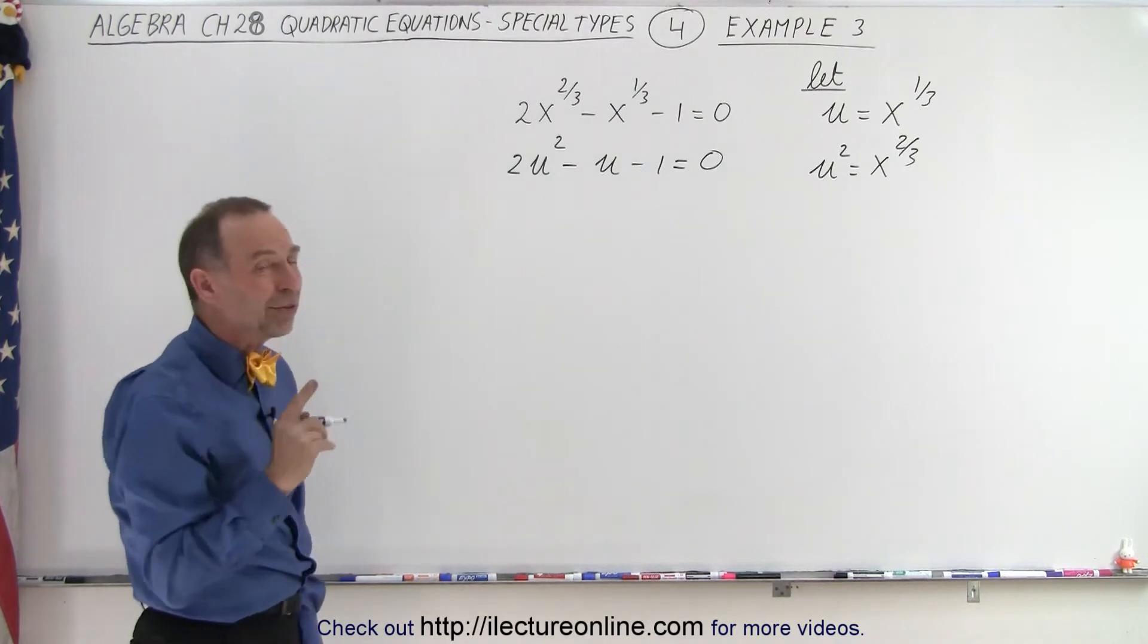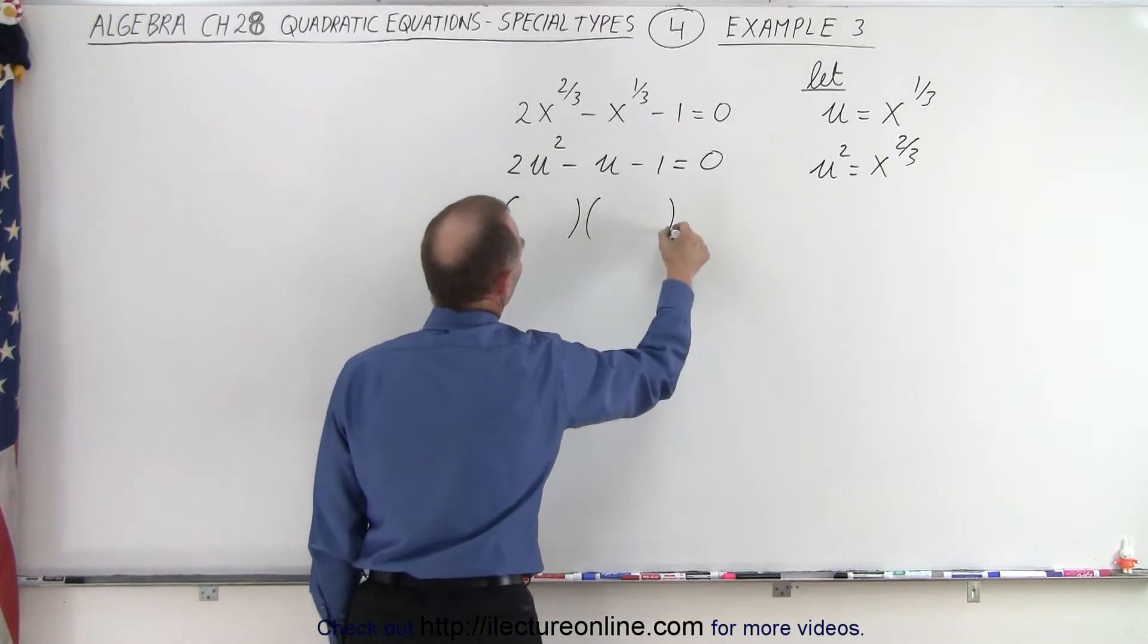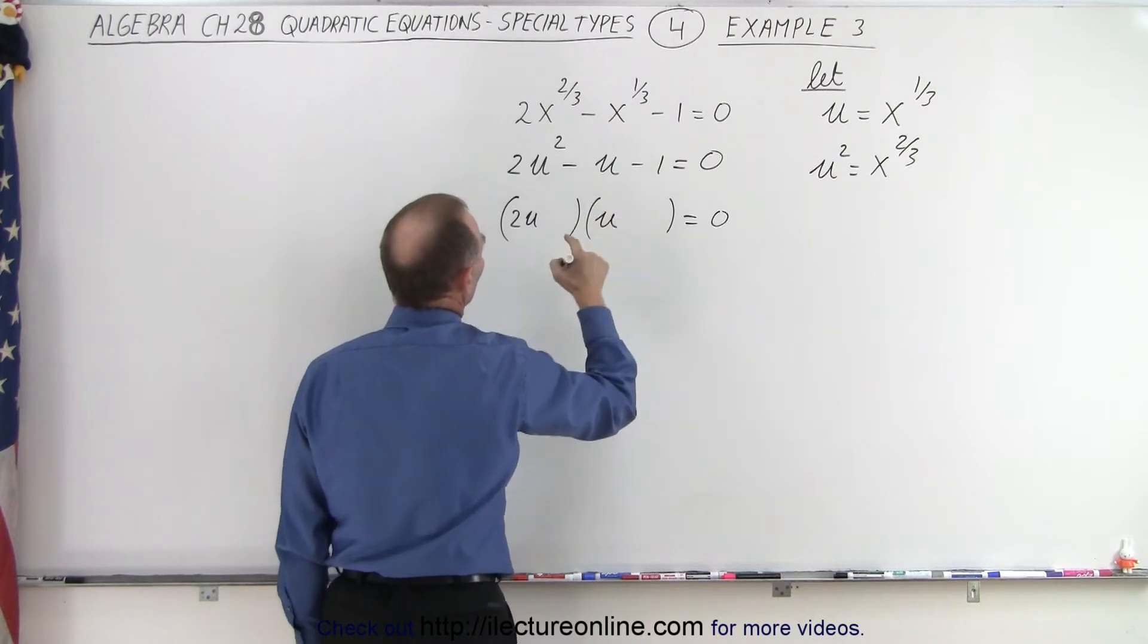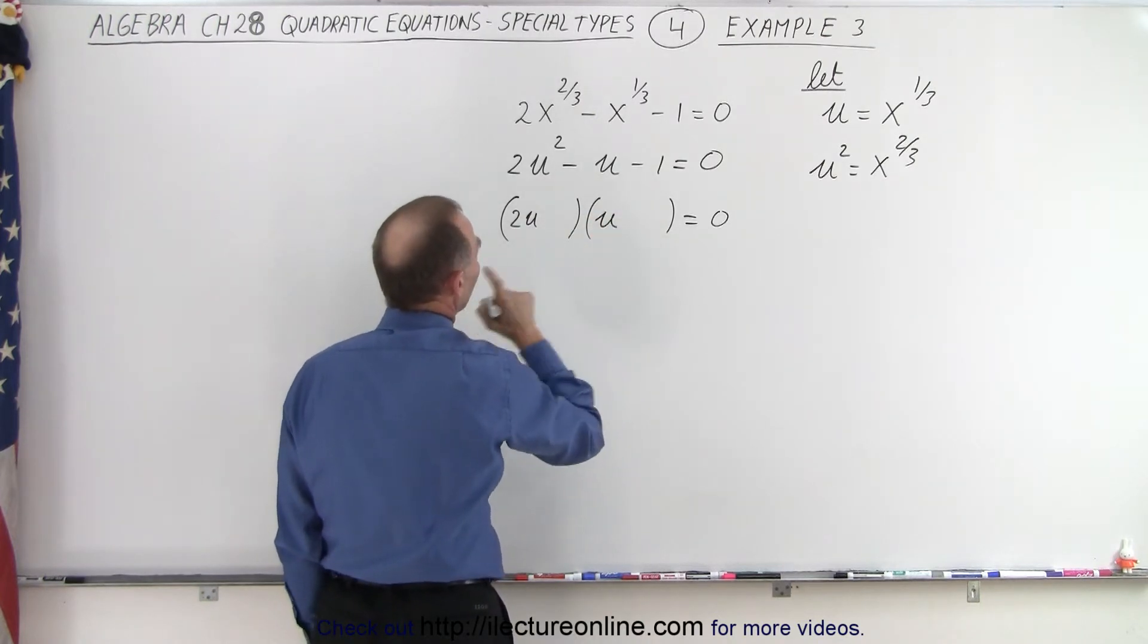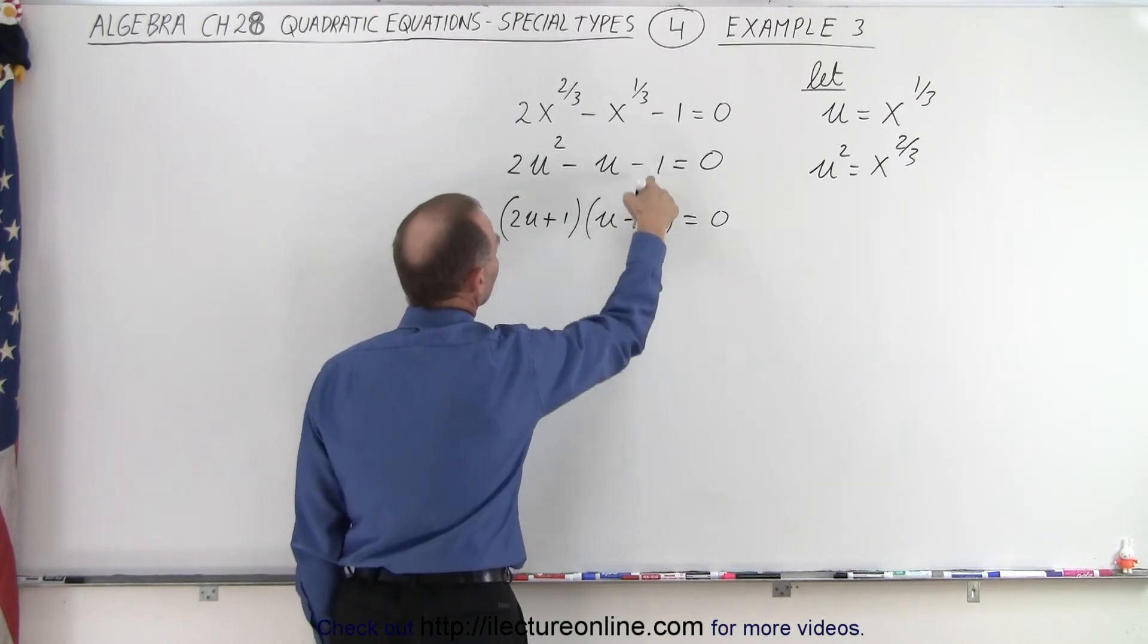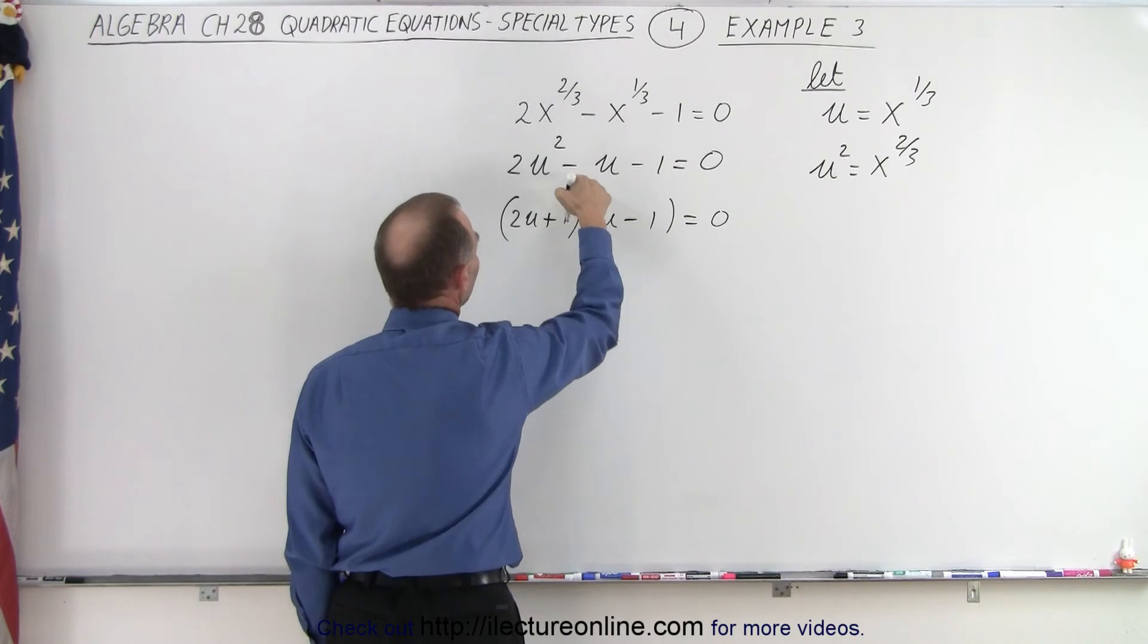We can probably factor that, so let's try it. So we're going to have two binomials equals 0. We need a 2u and a u. We need a positive and a negative. How about a negative 1 and a positive 1? Because when I multiply, I get negative 1, and when I add a negative 2 and a positive 1, I get a negative 1.